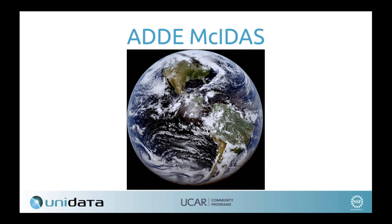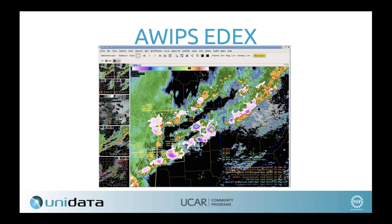We also have an AWIPS EDEX server running on the Gateway. AWIPS is the Advanced Weather Interactive Processing System employed heavily at National Weather Service Forecast Offices. EDEX is the server-side component of AWIPS, and here you have the AWIPS CAVE client that accesses the EDEX server. EDEX constitutes a very large part of our science gateway and our Jetstream allocation.